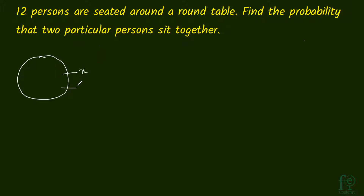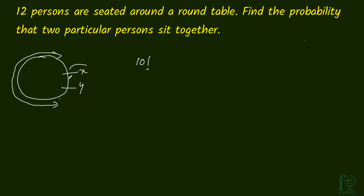Let us assume that these two particular persons are X and Y. So X and Y are to sit together. The remaining 10 persons can be arranged in any way. So, how many ways can 10 persons be arranged? 10 persons can be arranged in 10 factorial ways.